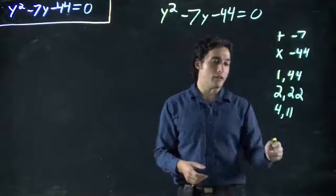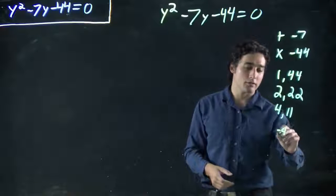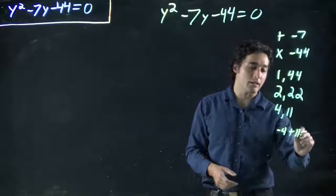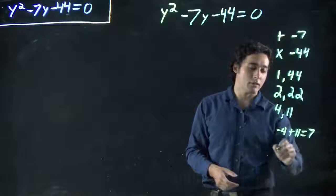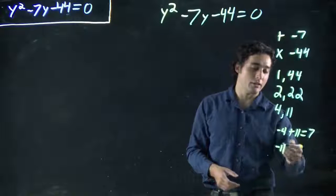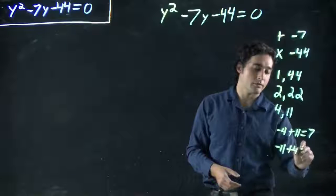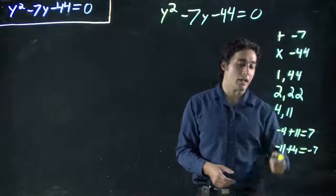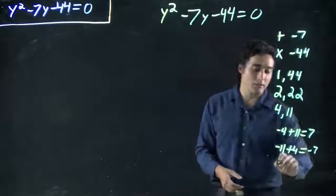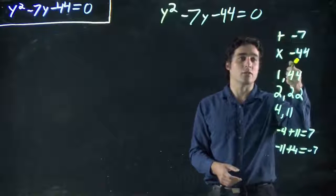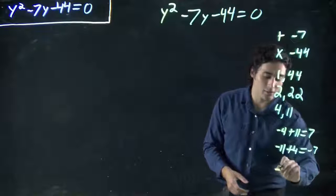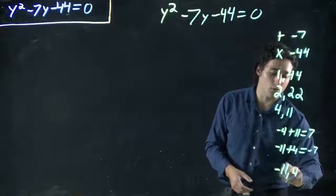Well, if I had -4 plus 11, that's going to give me 7. But if I had -11 plus 4, that equals -7. And -11 times 4 gives me -44. Ah, so my solution must be -11 and 4.